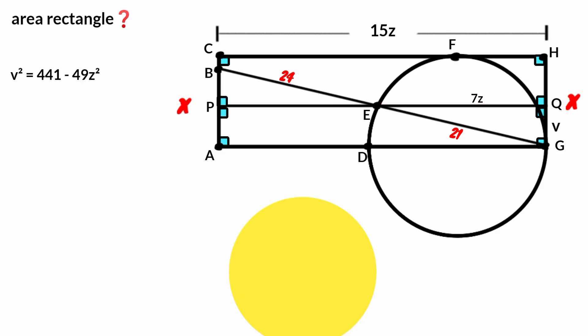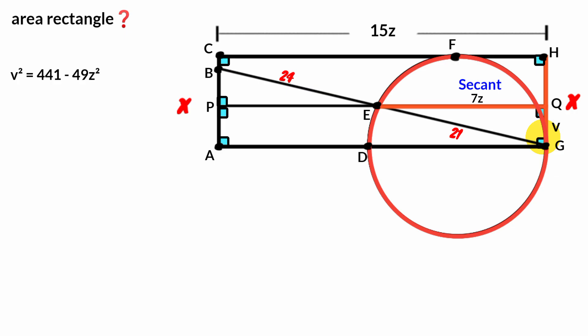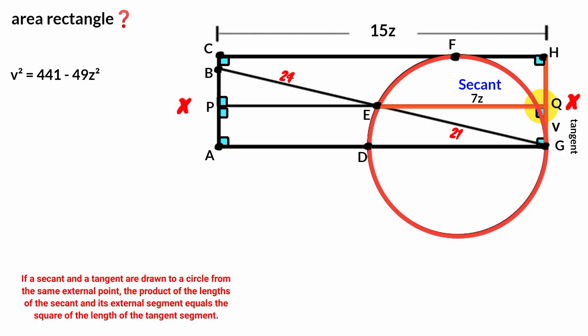Keep that aside. Now, line EQ starts from the circumference of the circle to another point on the circumference and extends outside — that makes it a secant. This line touches the circle at one point, making it a tangent. By the tangent-secant theorem: if a secant and a tangent are drawn from the same external point, the product of the secant length and its external segment equals the square of the tangent segment. So, letting this segment be Y: 7Z × Y = V².